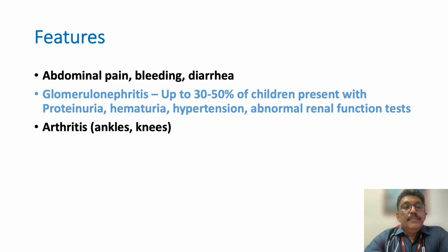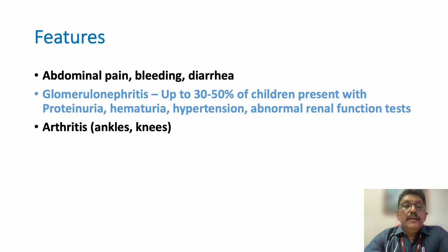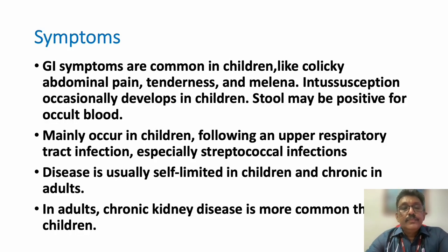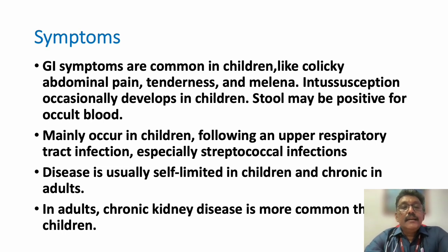Some patients can have abdominal pain, bleeding diarrhea, and arthritis. 30 to 50 percent of children can have acute glomerulonephritis, presenting with hematuria, hypertension, and abnormal renal function tests like elevated creatinine and urea; some can have proteinuria. Colicky abdominal pain is seen in many patients; rarely some patients can have bleeding per rectum or melena. Intussusception can develop in some children, and occult blood can be positive in many.